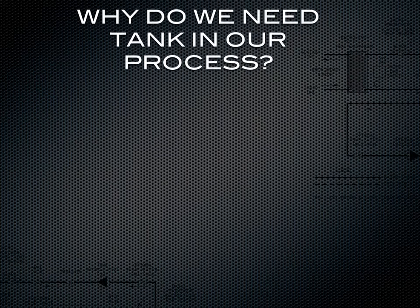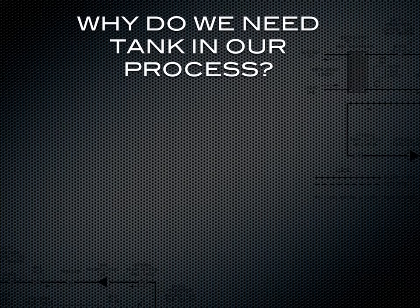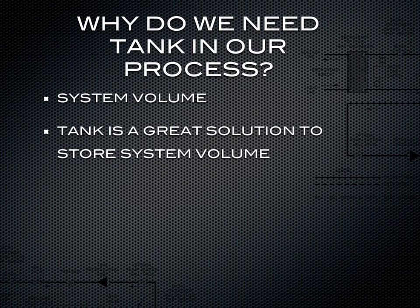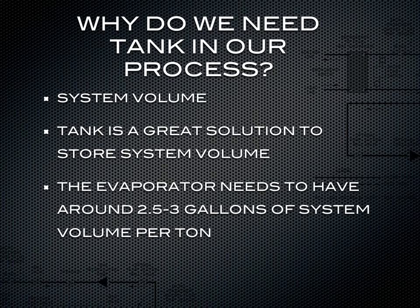Why do we need a tank in our process? One of the main reasons is for system volume. If you don't have enough piping between your chiller and the piece of equipment you're trying to cool, a tank is a great solution for that. A tank really just acts as a big piece of pipe. The reason we need system volume is to satisfy the chiller evaporator. The chiller evaporator needs around 2.5 to 3 gallons of system volume per ton somewhere in the system — that can be in a tank, in piping, or in both.